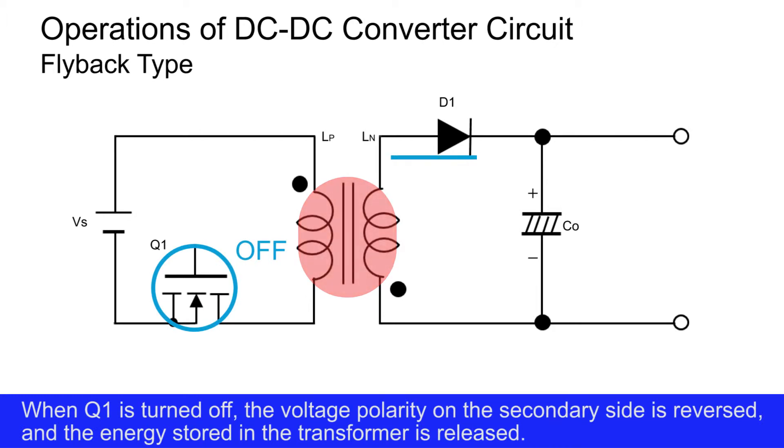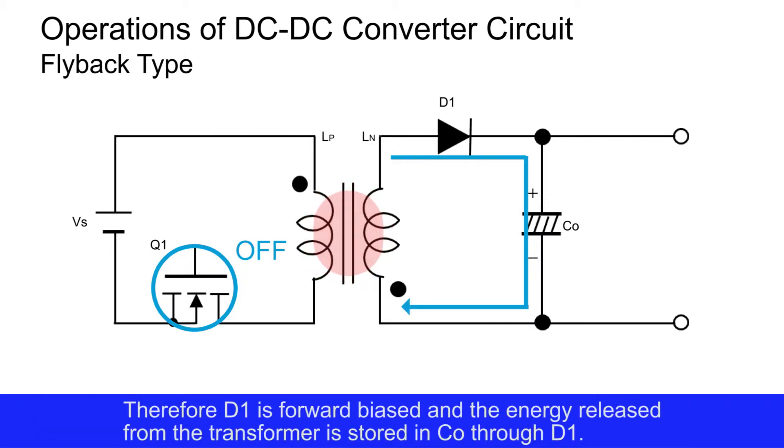When Q1 is turned off, the voltage polarity on the secondary side is reversed, and the energy stored in the transformer is released. Therefore, D1 is forward biased, and the energy released from the transformer is stored in CO through D1.